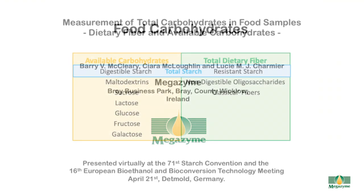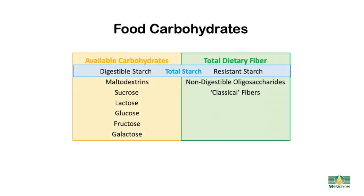Food carbohydrates can be divided into Available Carbohydrates and Total Dietary Fibre. Available Carbohydrates include Digestible Starch, Maltodextrins, Sucrose, Lactose, Glucose, Fructose and Galactose, whereas Total Dietary Fibre is composed of the Classical Fibres as defined in the Prosky Method, Non-Digestible Oligosaccharides and Resistant Starch.